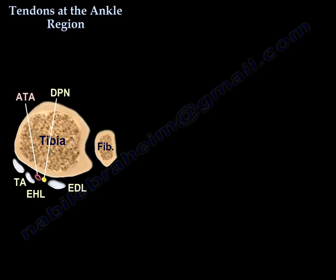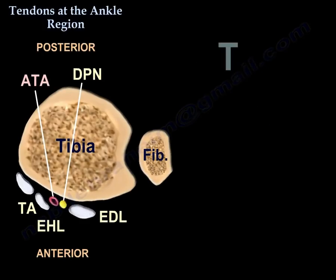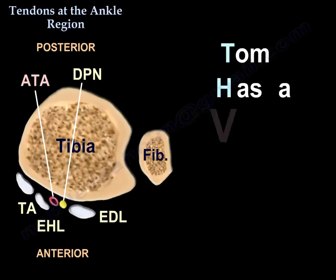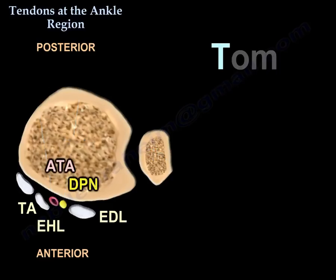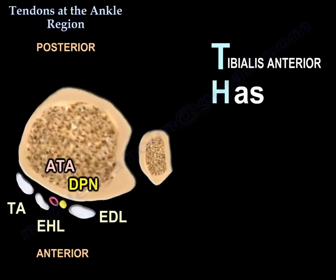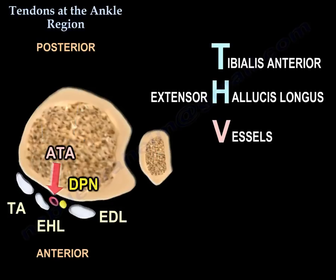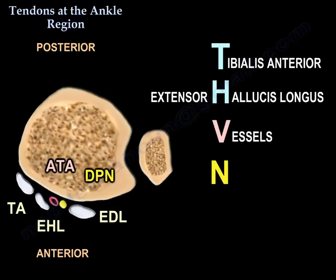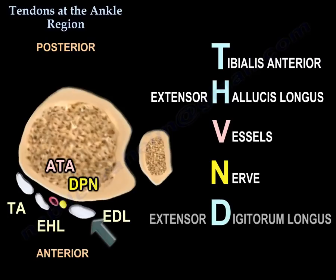This is how we remember the arrangement of the anterior ankle structures. We will remember it by 'Tom Has Very Nice Dog.' T is for tibialis anterior, H for the extensor hallucis longus, V for vessels, N for nerve, and D for the extensor digitorum longus.